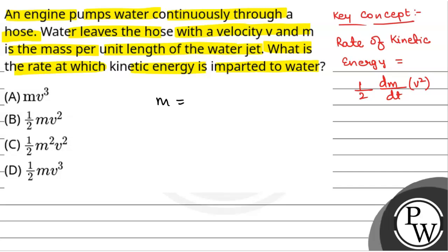Now, we have been given m is equal to mass per unit length, m by L. So rate of mass per second, that is dm by dt, that will be equal to m x by t, that will be equal to m v.